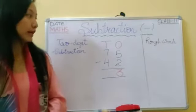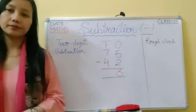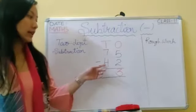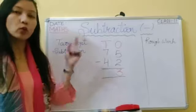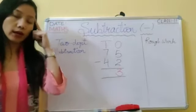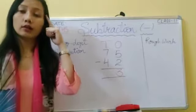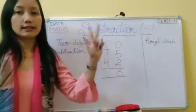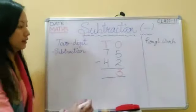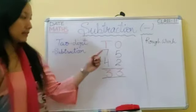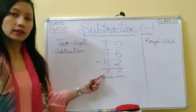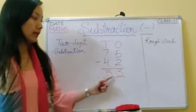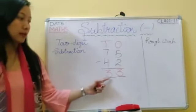Now let's subtract the tens column — seven minus four. Keep the smaller number four in your head and count on to seven: four, five, six, seven. Three is the answer. Seven minus four — the difference is three. That means 75 minus 42 is equal to 33.